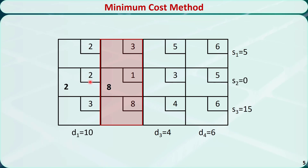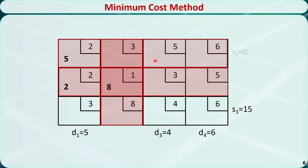Continue with the process. Find the cell with the minimum cost in the remaining tableau, which is this cell. The largest amount we can allocate is 5. We put 5 here and subtract it from S1 and D1. S1 will be 0 and D1 will be 5. This is the new tableau. We need to cross out the first row and remove S1 because S1 is 0.